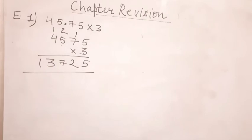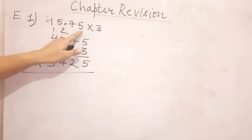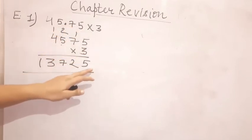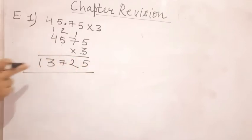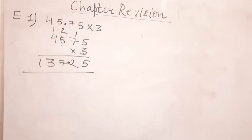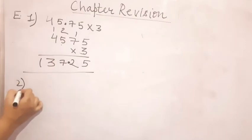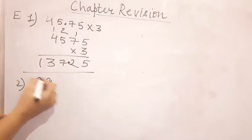Now after completing the standard multiplication process, you have to check how many digits are there after the decimal point. There are two digits after the decimal point — one, two. So from the extreme right in the answer we have to count two digits — one, two — and then place the decimal point. The final answer will be 137.25.